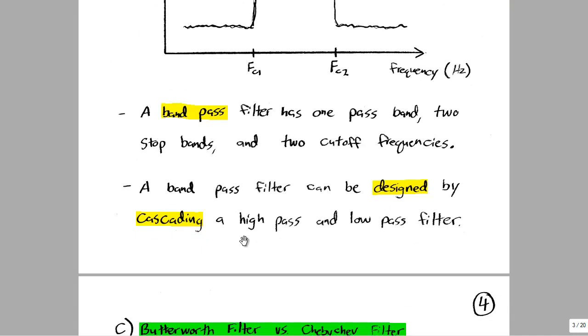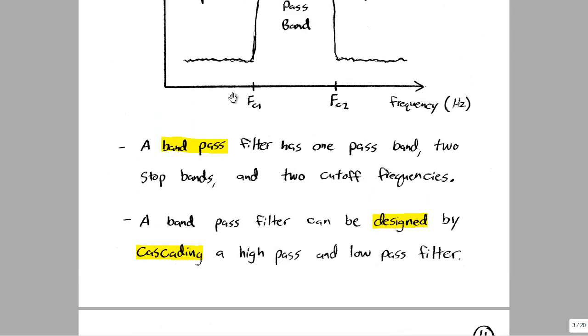To design these in lab, we're going to cascade a high pass and a low pass filter. You design the high pass filter for cutoff frequency one, then output that directly to another low pass filter designed for cutoff frequency two, and you get an overall band pass filter response.